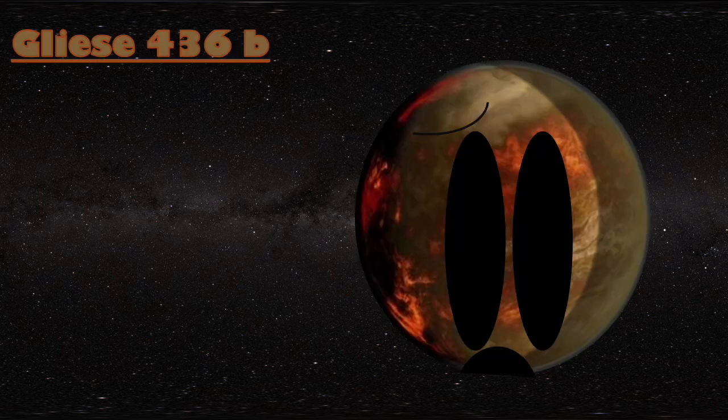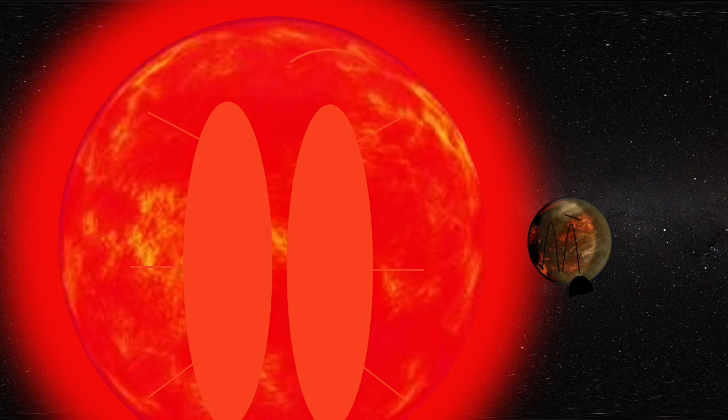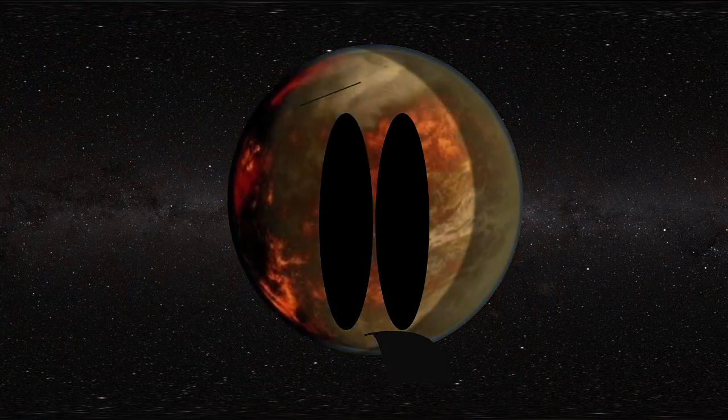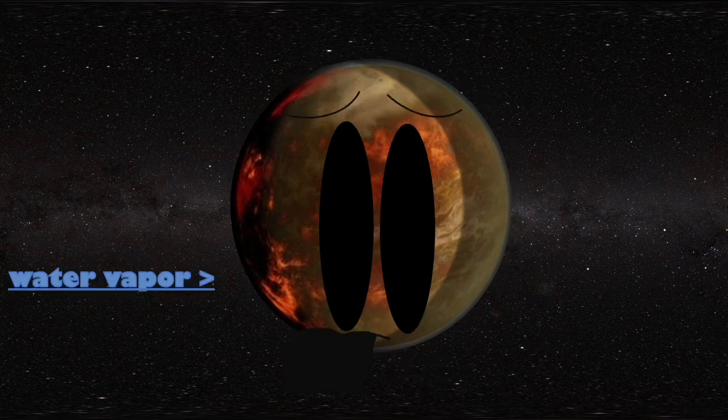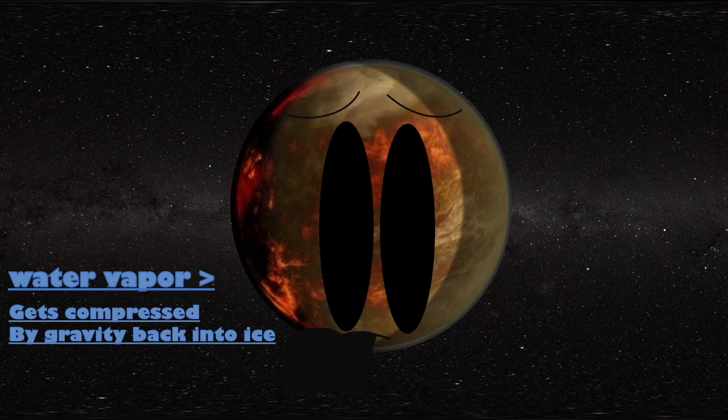I defy the laws of physics with my burning ice. I'm Gliese 436b. I have a scorching hot surface because I'm 15 times closer to my sun than Mercury. Oddly, my surface is mostly ice, but it's on fire. How could that be? My gravity is so strong that it compresses any water vapor back into ice on me.